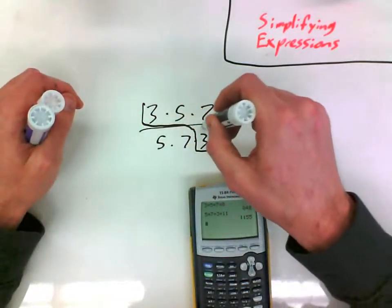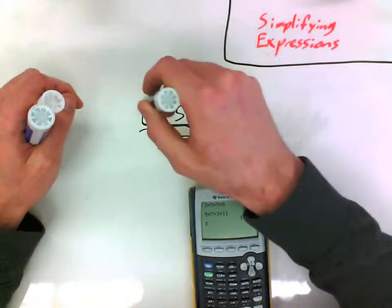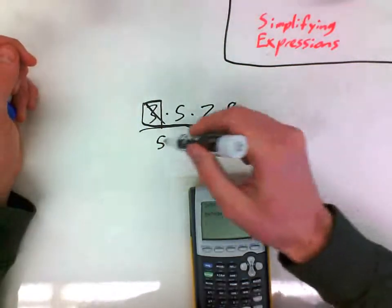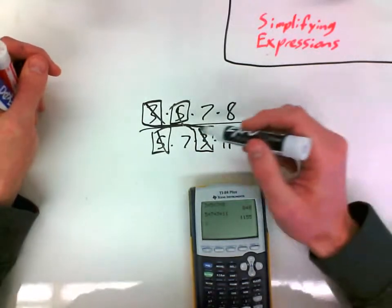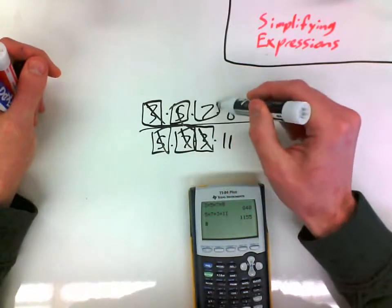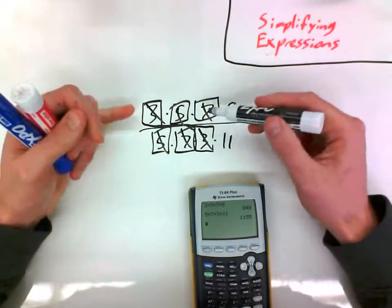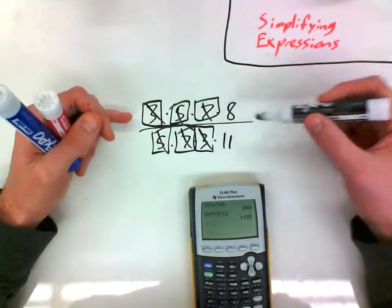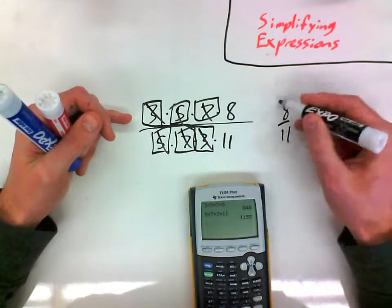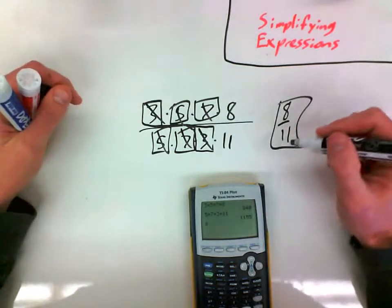So, 3 divided by 3 is 1, so if they're both there, I can cross them both off. Same thing with 5 and 5, those two are just crossed off, and same with 7 over 7. So all of these things, that's the equivalent of saying 1 times 1 times 1 times 8 elevenths. So this simplifies to 8 elevenths.